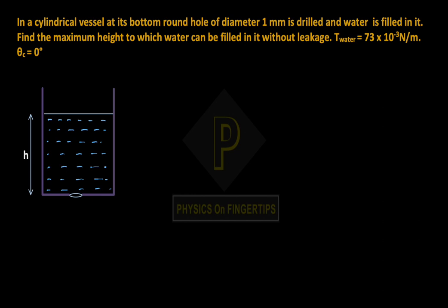T water is given as 73×10⁻³ N/m, and theta contact has been given as zero degrees. So, what do we do here?